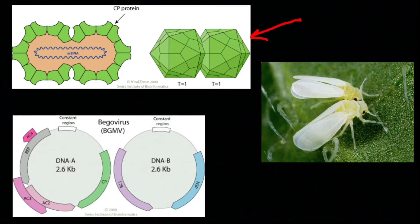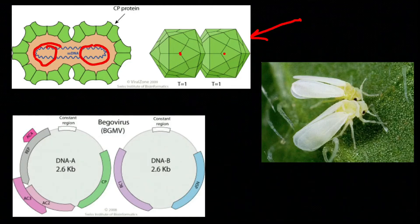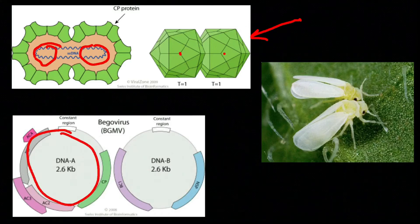यह है वायरस का protein coat — ऐसा लग रहा है जैसे दो वायरस जुड़े हुए हैं, लेकिन यह एक ही वायरस है और इसे geminate particle कहते हैं। इसके अंदर single-stranded circular DNA होता है, जो दो भागों में बटा होता है — DNA A और DNA B।